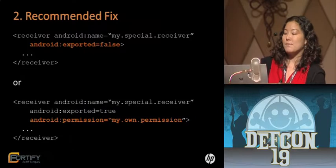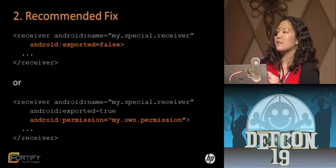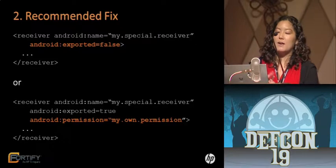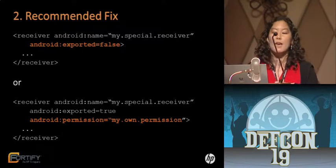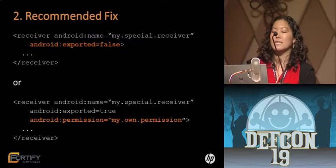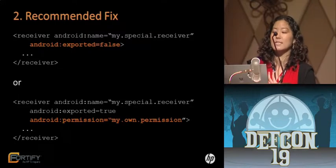Our recommended fix for intent spoofing is to use the exported flag when declaring components and explicitly make the component public or private — always make it explicitly stated, and make it private whenever possible. If the component must be public, consider limiting the interface by requiring that the sender has a permission. In the second code example, even though exported is true, it also has a permission requirement. In any case, make sure public components aren't performing any sensitive operations.